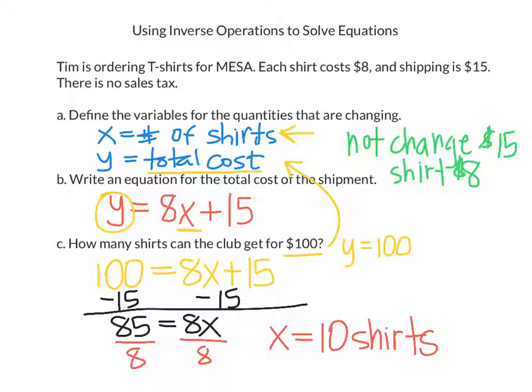If it wasn't for that shipping cost, they could get a couple more. They could get 12 with a little bit left over. But that's all they can get with what they've got so far.